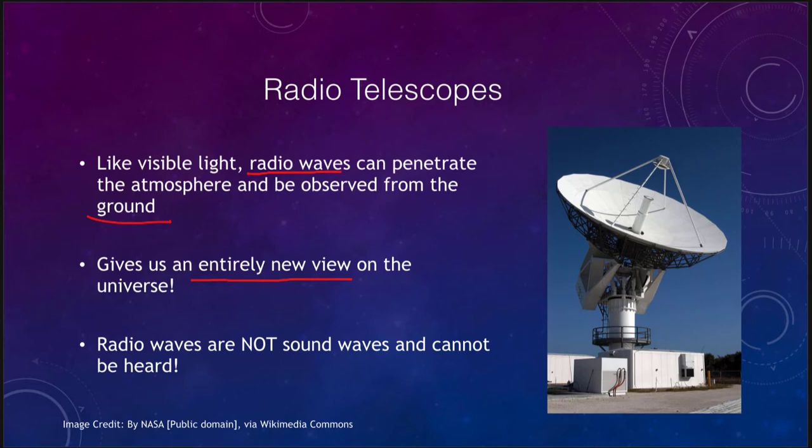Radio telescopes give us a very different view of the universe, and we're going to see very different things when we look at objects with them. There are objects that are visible in radio telescopes that are completely invisible to optical telescopes, and of course there are objects visible in optical telescopes that cannot be seen by radio telescopes. So it gives us a completely new view of the universe.